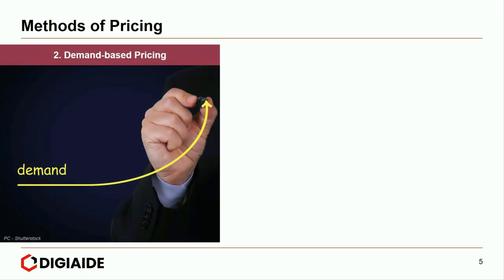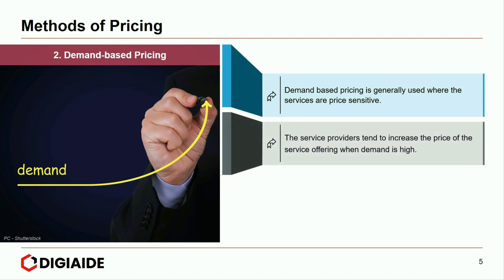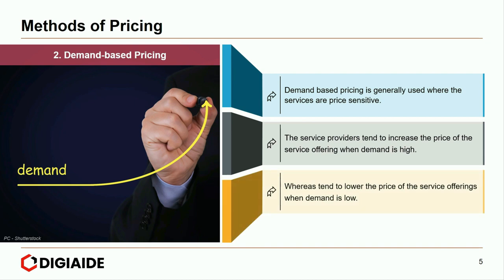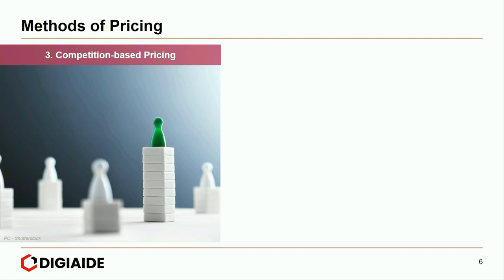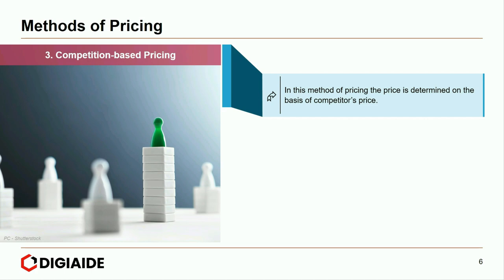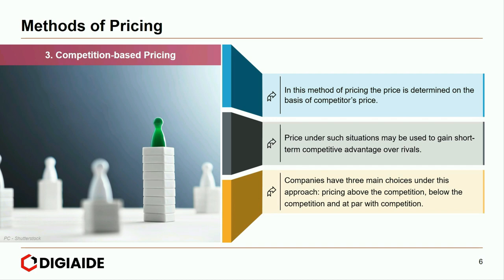Moving on to demand-based pricing, which is generally used where services are price sensitive. Service providers tend to increase the price when demand is high and lower the price when demand is low. Moving on to the third method, competition-based pricing — the price is determined on the basis of competitor's price. This strategy works well between Burger King and McDonald's. Price may be used to gain short-term competitive advantage over rivals. Companies have three main choices: pricing above the competition, below the competition, or at par with competition.